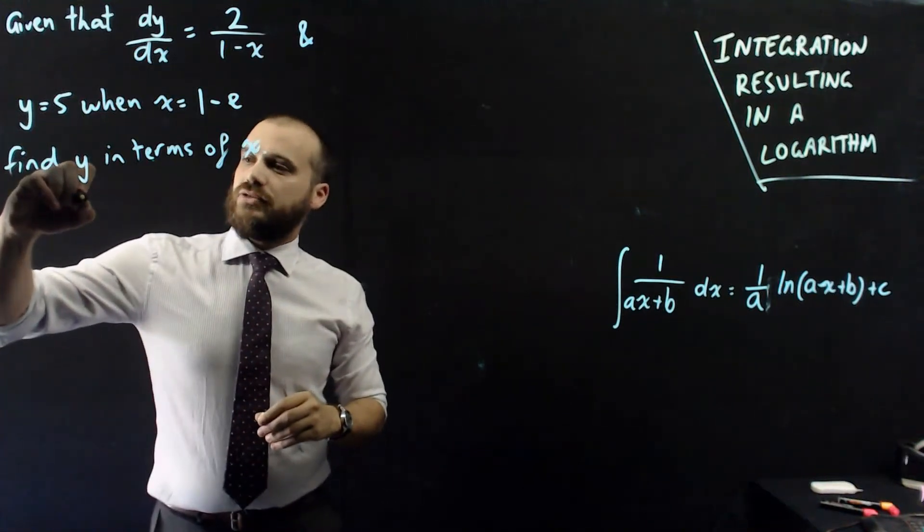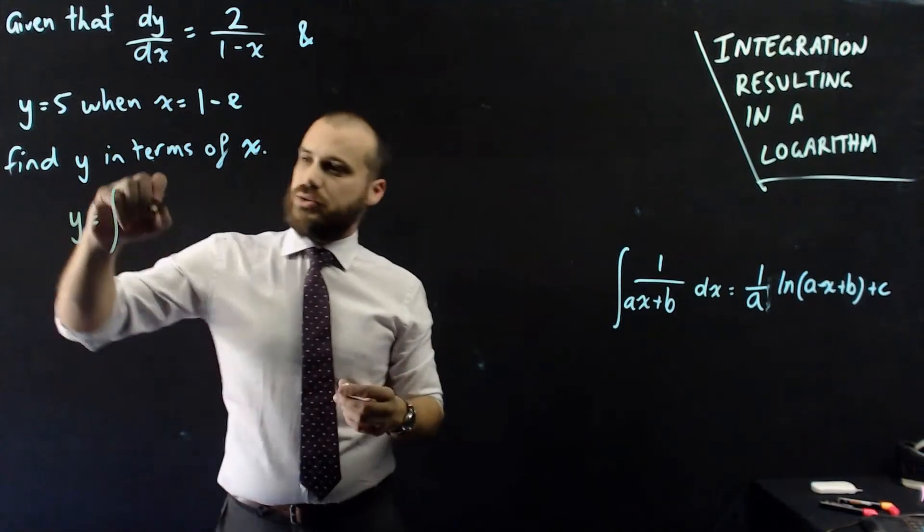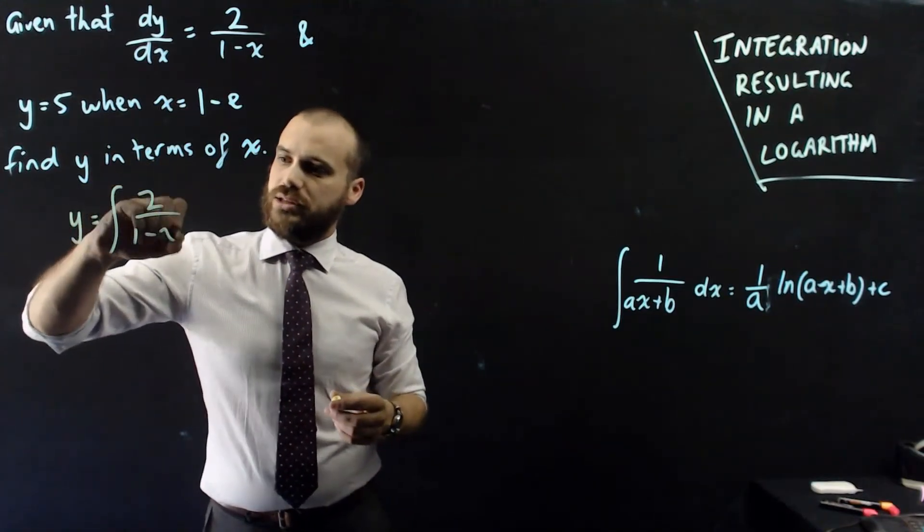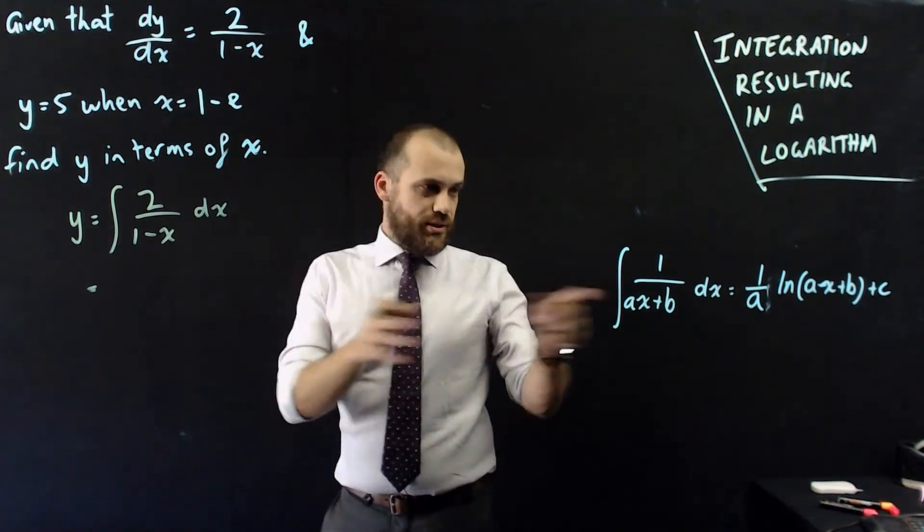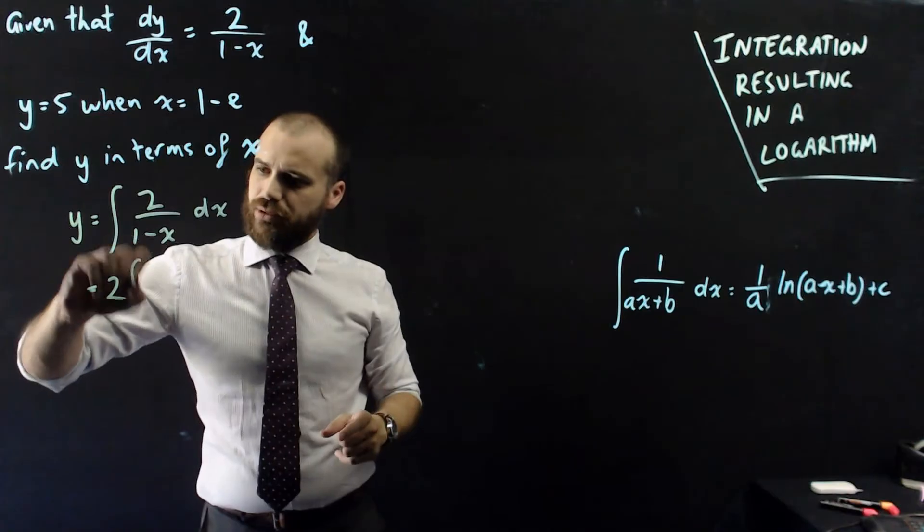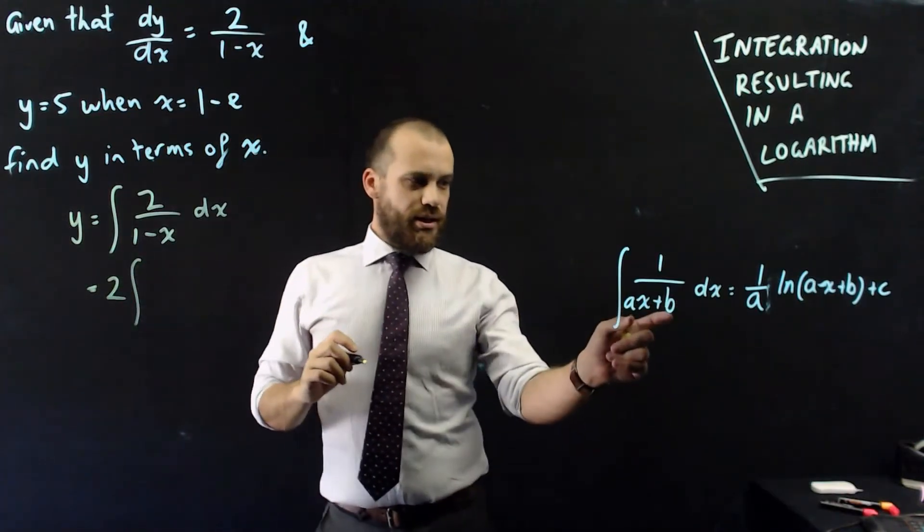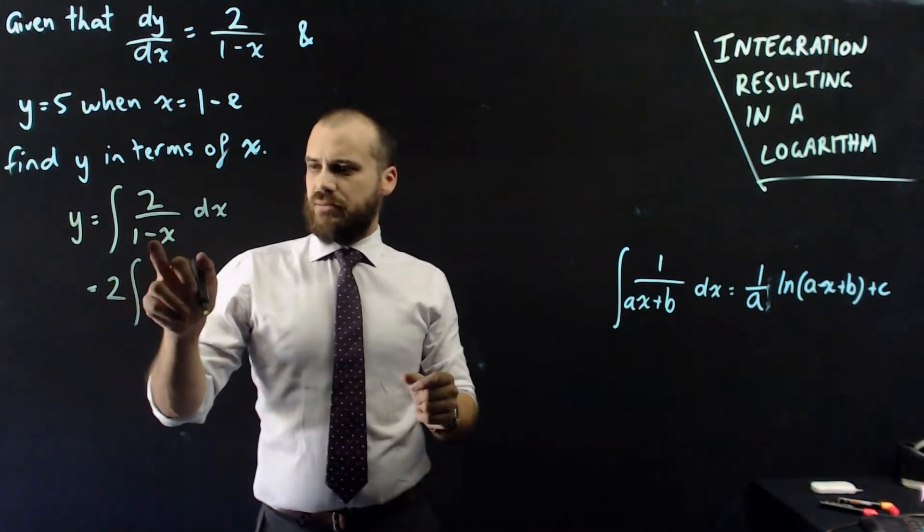So, first of all, let's find the, so y will be equal to the integral of dy dx, which is 2 on 1 minus x, with respect to x. Okay, now again, it's not quite in this form. There's two problems. There's a 2, which I can get rid of by bringing that out the front, and then it's not in the form ax plus b, it's in the form b minus ax.